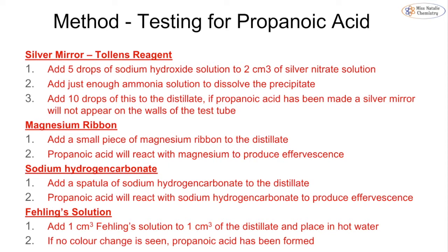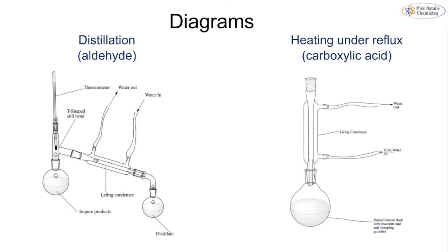When testing for propanoic acid we carry out the same four tests: Tollens' reagent, magnesium ribbon, sodium hydrogen carbonate, and Fehling's solution. The two we want to focus on are magnesium ribbon and sodium hydrogen carbonate. If propanoic acid has formed, we should see no colour change with Tollens' or Fehling's solution, but we should see effervescence with the magnesium ribbon and the sodium hydrogen carbonate, because both react with an acid. The distillation apparatus is on the left for the aldehyde and the reflux setup is on the right for the carboxylic acid.